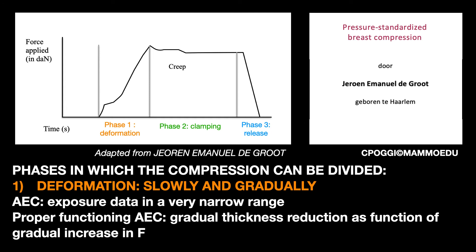Both the first and the second phase of the compression cycle are critical for the production of high-quality mammograms. The first phase has to be implemented slowly and gradually. My advice is therefore not to use the jump technique — pressing on the paddle several times until reaching the value you want — but rather holding it down continuously and lightly. If you go too fast, there may be an opposite reaction to the force exerted, called CRIP. The main reason for adopting a gradual approach is that FFDM systems are based on automatic exposure control, and the exposure data required to produce a high-quality mammogram fall within a very narrow range. These systems include thickness, and they work well when the thickness reduction is gradual as a function of an equally gradual increase in the applied force.